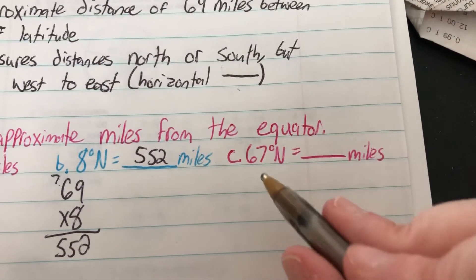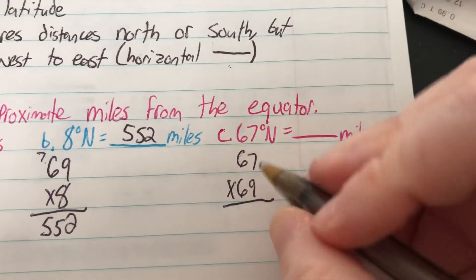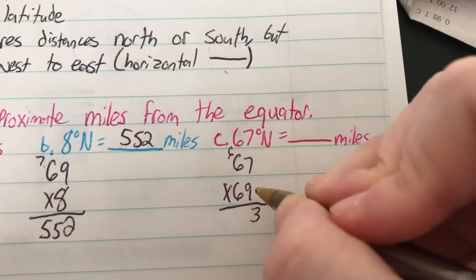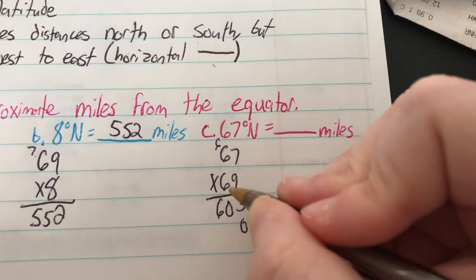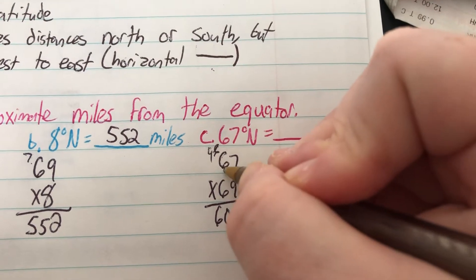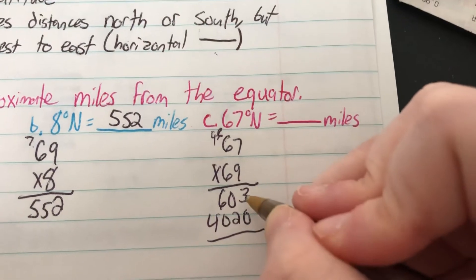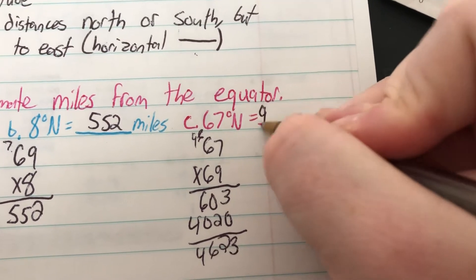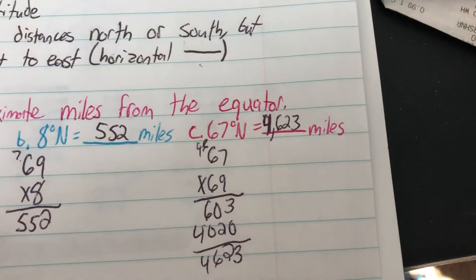On C it is 67 degrees north. So 67 times 69. 9 times 7 is 63. 9 times 6 is 54, plus 6 is 60. 6 times 7 is 42. 6 times 6 is 36, plus 4 is 40. Add it up. So 67 degrees north is 4,623 miles north of the equator.